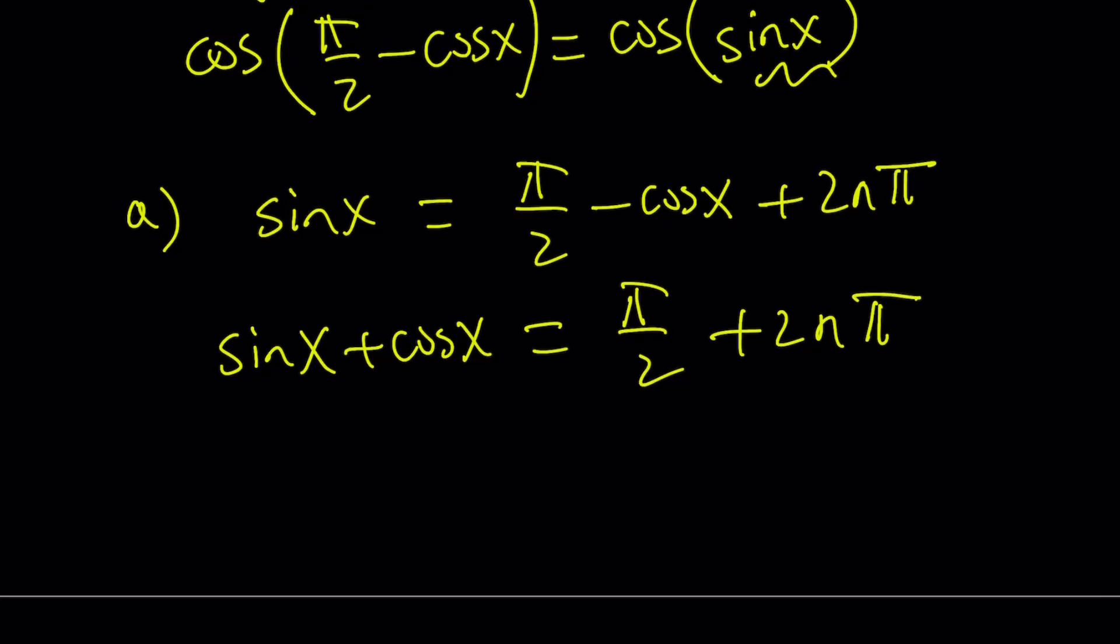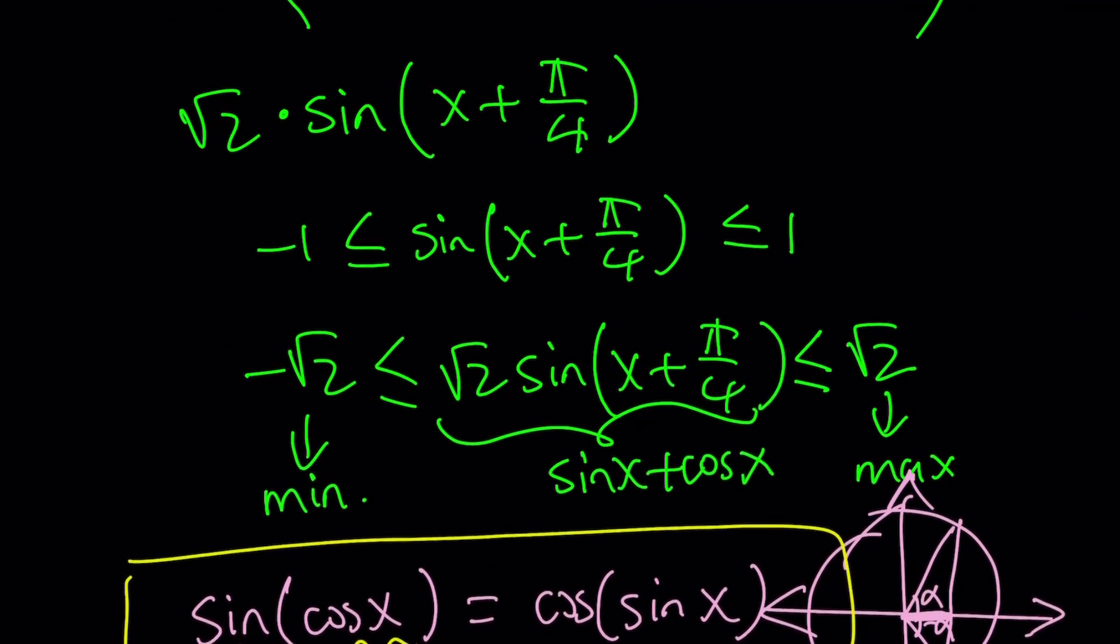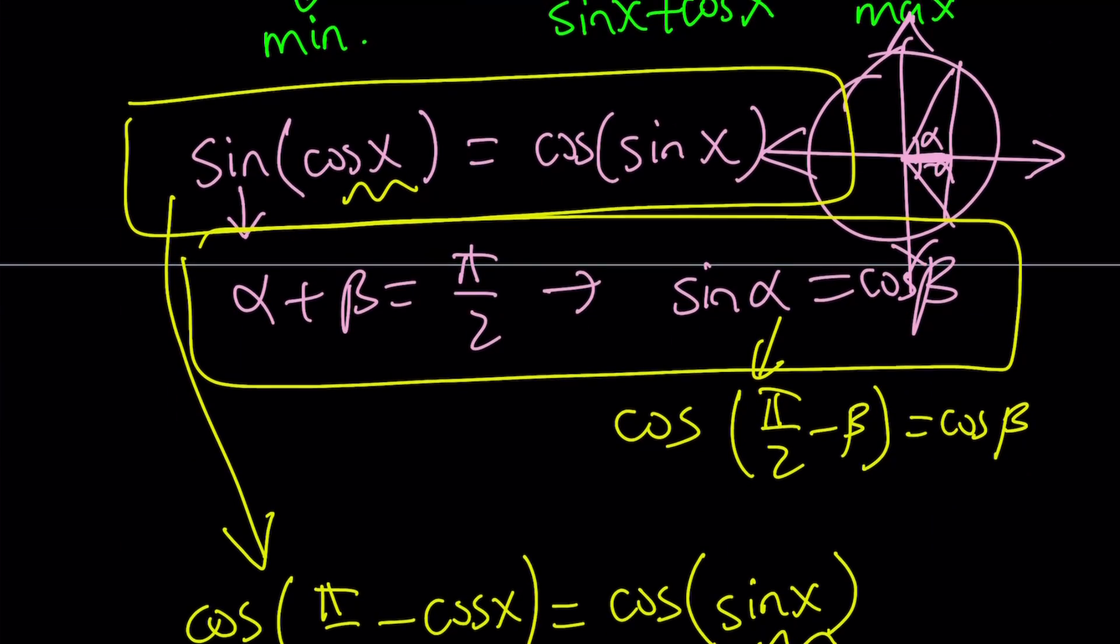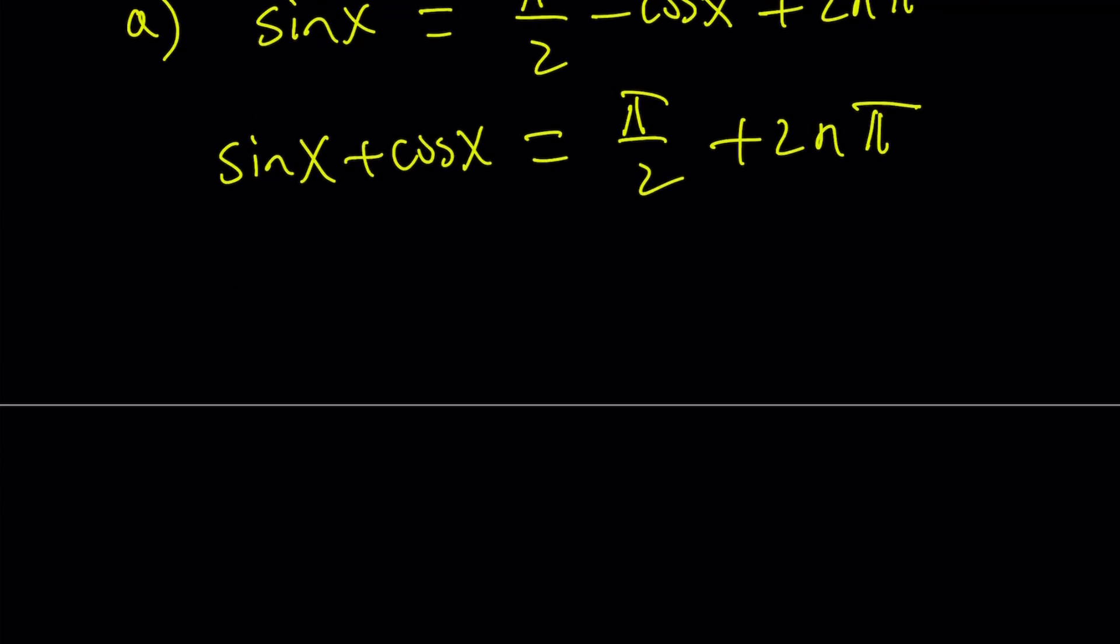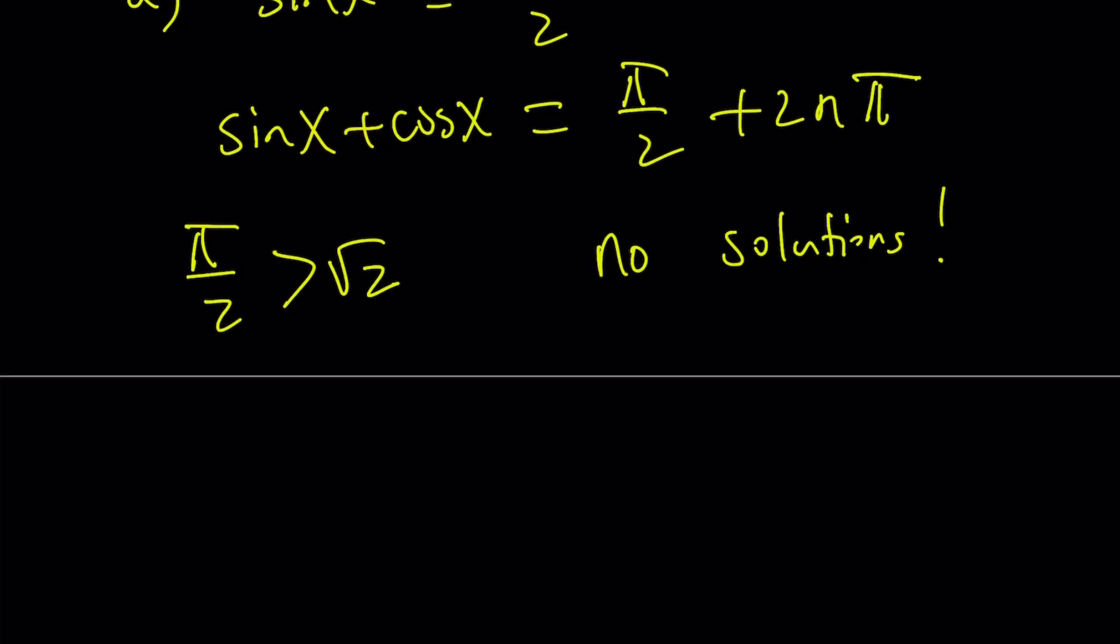And now notice that I have the sine plus cosine, and that's why we wanted to talk about that first, is equal to π/2. Remember what we found, the maximum value for sine plus cosine is root 2. And notice that π/2 is definitely greater than root 2 because root 2 is about 1.4 and π/2 is about 1.5-ish. Therefore, this is impossible. You can't exceed root 2 for sine plus cosine. Therefore, we get no solutions from this branch. No solution is also considered a solution.